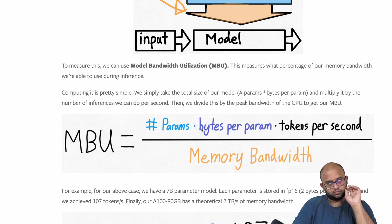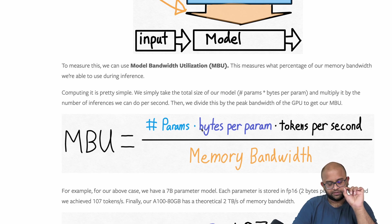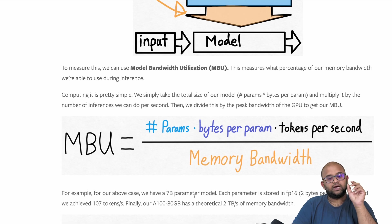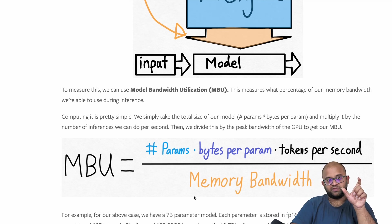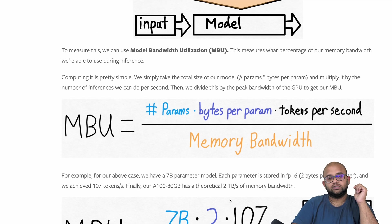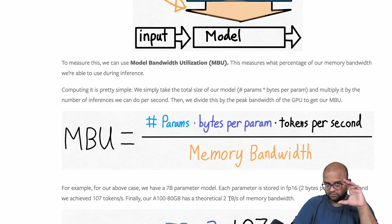By default, fp16 or bf16 has become the standard for model loading, taking two bytes per parameter — so for 7 billion parameters that's 14 GB. They found that just by reducing from fp16 to int8 they can bring down the bytes from two to one, cutting memory in half.